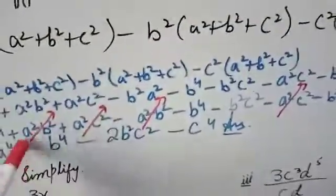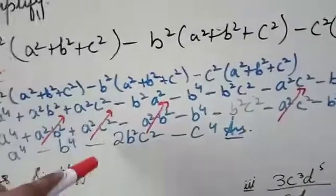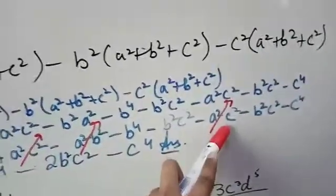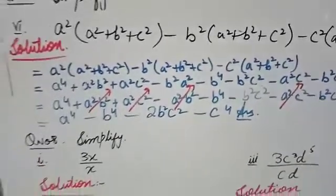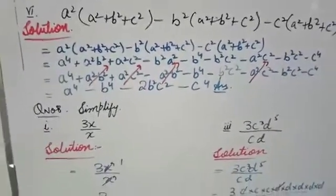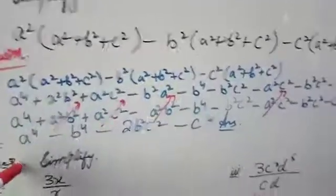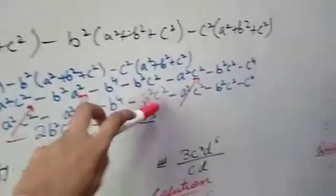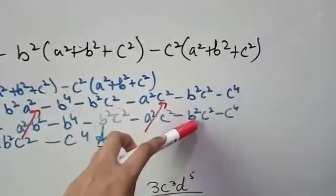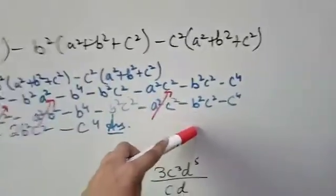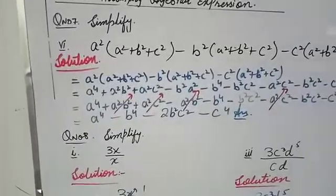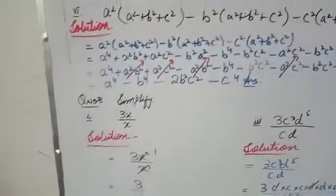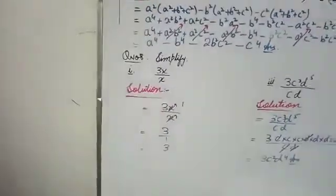When these cancel, their value becomes zero. Similarly, a²c² with a positive sign and a²c² with a negative sign also cancel to zero. The remaining terms are: a⁴ minus b⁴, minus b²c² minus b²c² which gives minus 2b²c², and minus c⁴. So your answer is a⁴ - b⁴ - 2b²c² - c⁴.